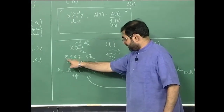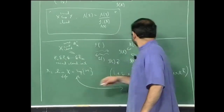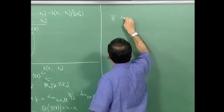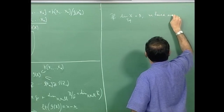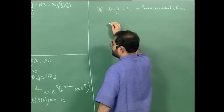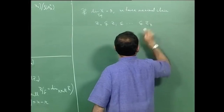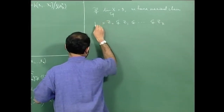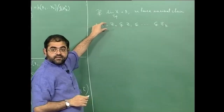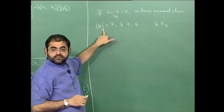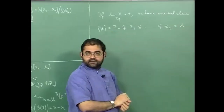If the dimension of X is R, we have a maximal chain z₀ properly contained in z₁ and so on up to z_r. You should understand that z₀ has to be a point — because if z₀ is not a point and it is a maximal chain, I can get a contradiction by inserting a single point into z₀, which would contradict the maximality of the chain.